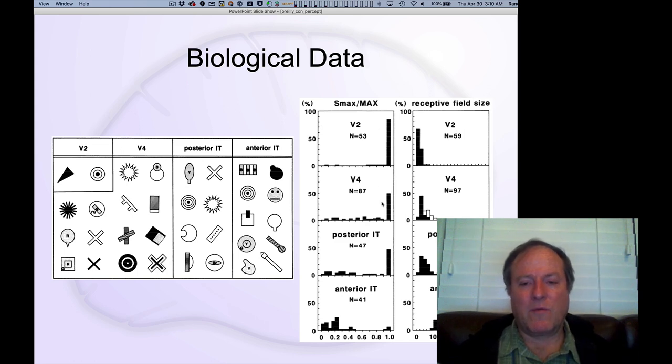This bar on the right is telling you what proportion of the neurons respond maximally to that compared to one of these other stimuli. You can see for V2, most of the neurons really do respond still maximally to those simple oriented edge detectors.